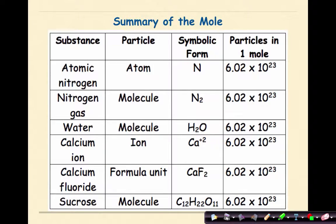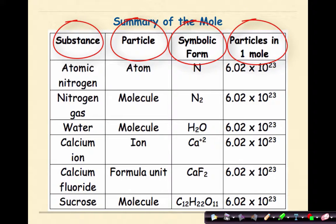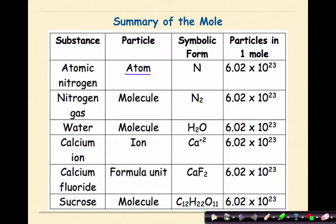Here's another way of looking at it. I have a substance, a particle, a symbolic form, and particles in one mole. If I wanted to represent atomic nitrogen, I'd be talking about an atom with a symbol of N. And in one mole, I'd have 6.02 times 10 to the 23rd nitrogen atoms.